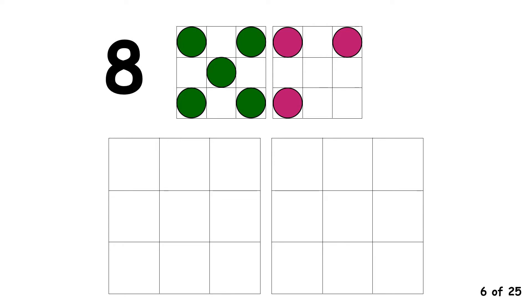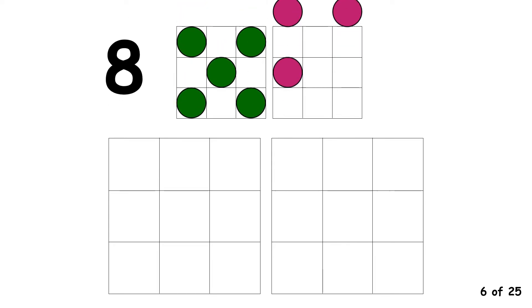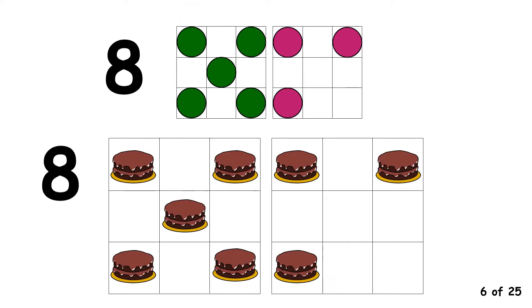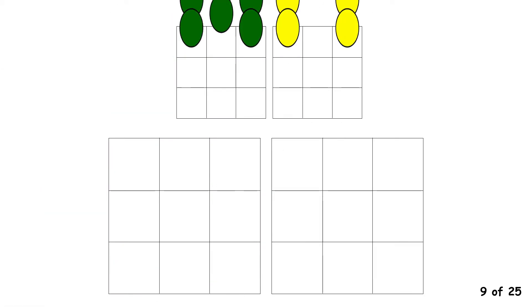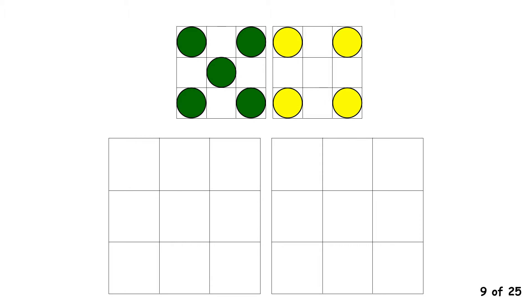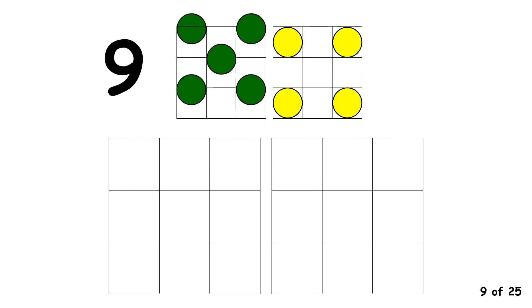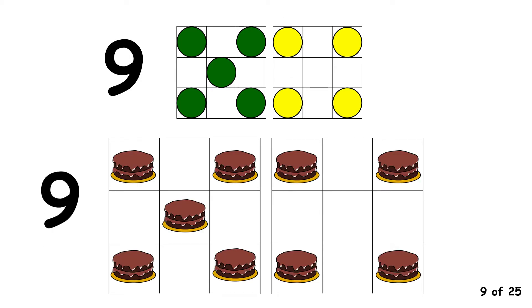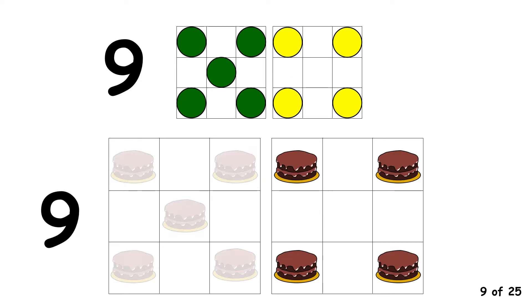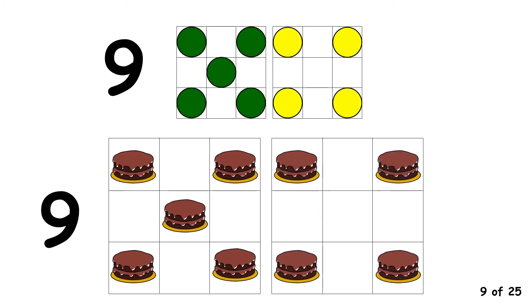8 is made with 5 and 3. 8 is made with 5 and 3. 9. 9 is made with 5 and 4. 9 is made with 5 and 4.